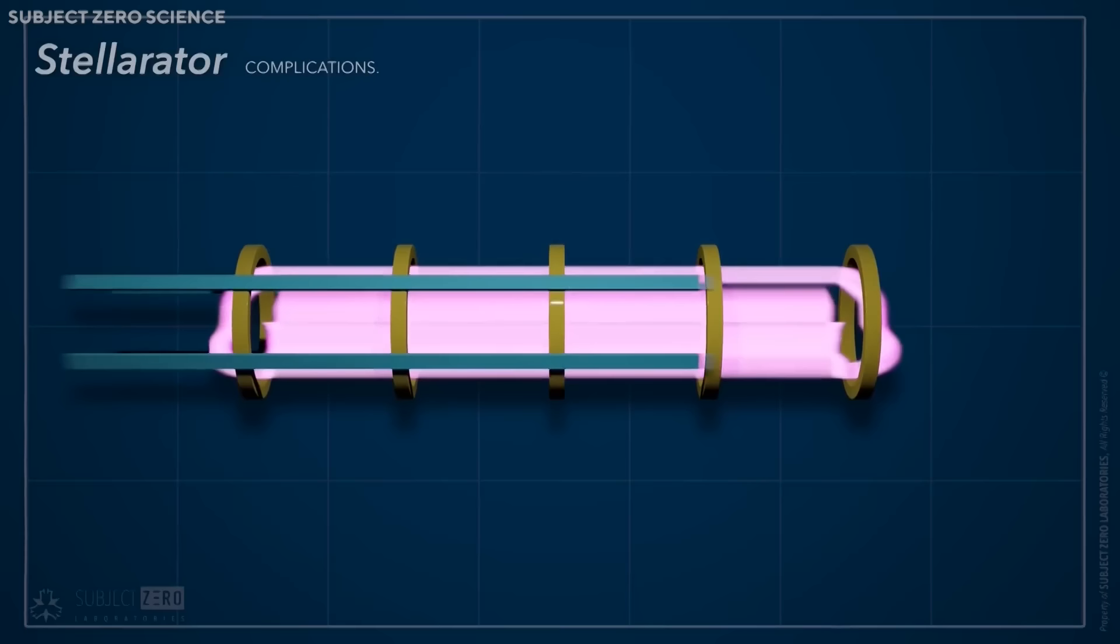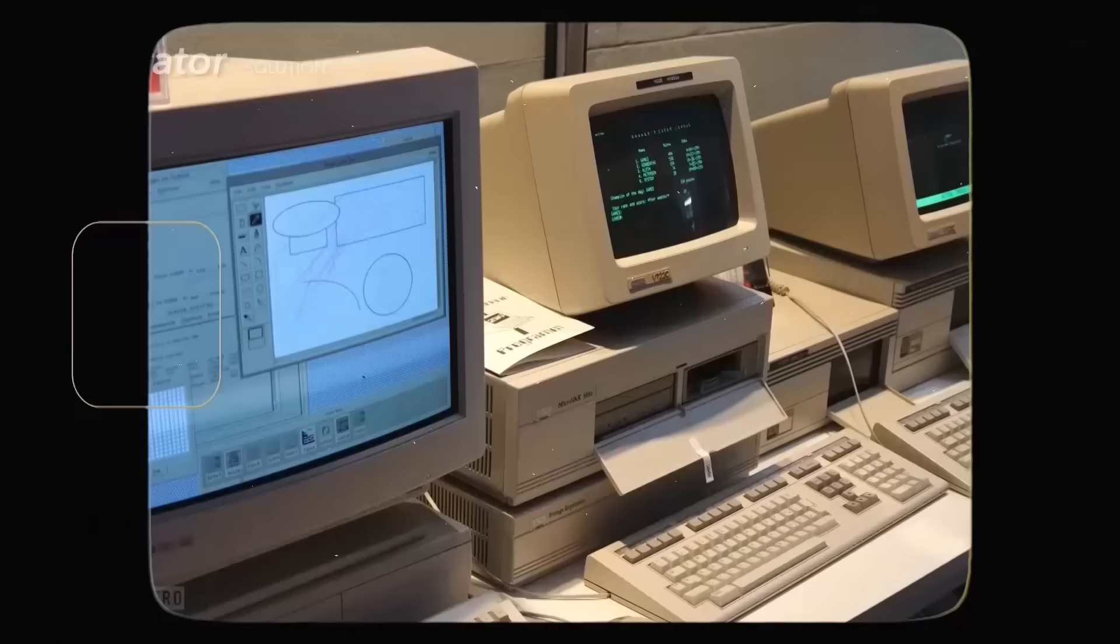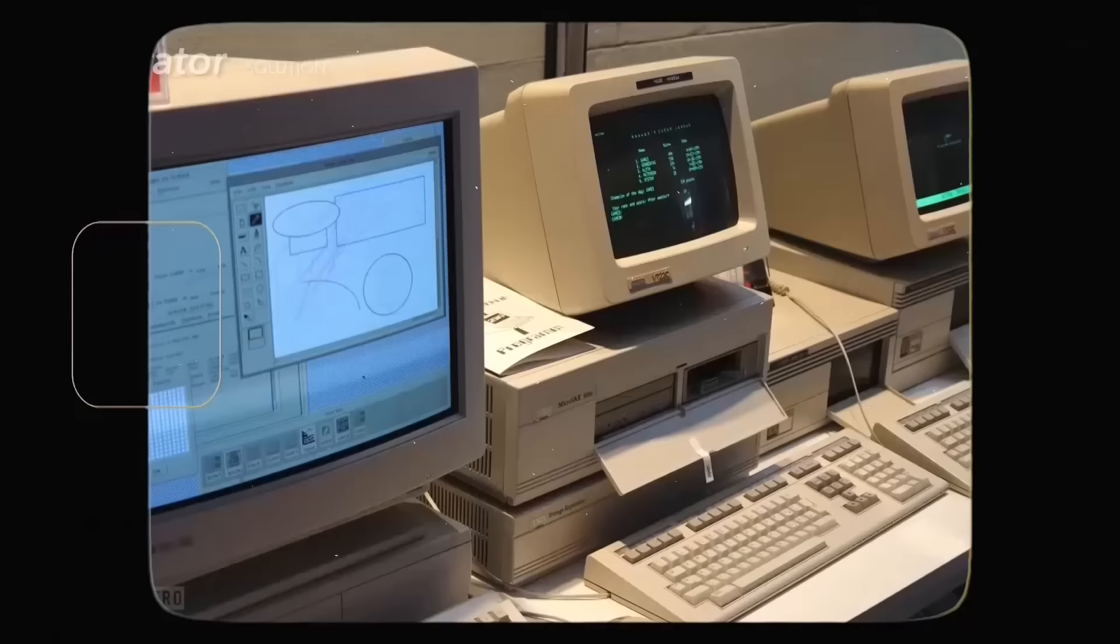The stellarator was overshadowed by the tokamak, which showed superior performance and simplicity in the 1960s and 1970s. Stellarator research was largely abandoned in the U.S., but continued in Germany and Japan, where new designs and innovations were developed.